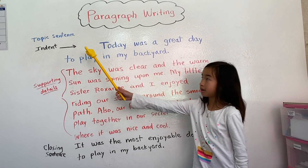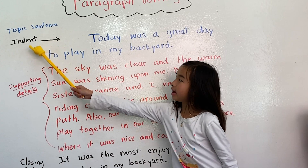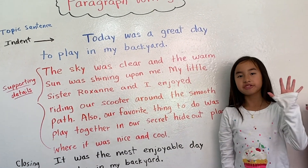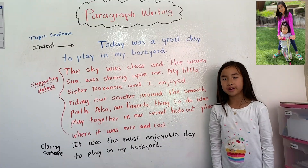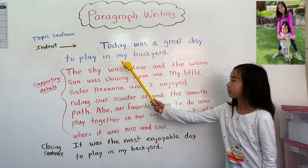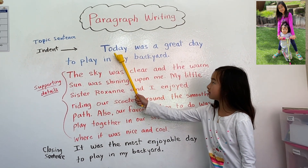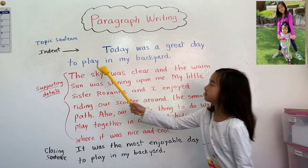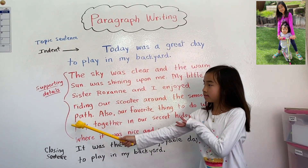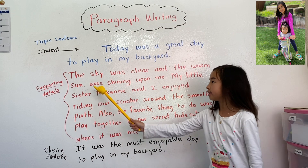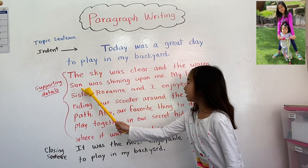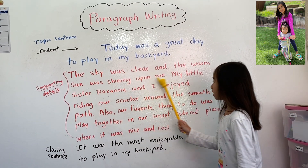Before I started my topic sentence, I indented — meaning I skip over five spaces to the right before you start your topic sentence. Let's start reading my topic sentence: Today was a great day to play in my backyard. Now, these are my three supporting details: The sky was clear and the warm sun was shining upon me.